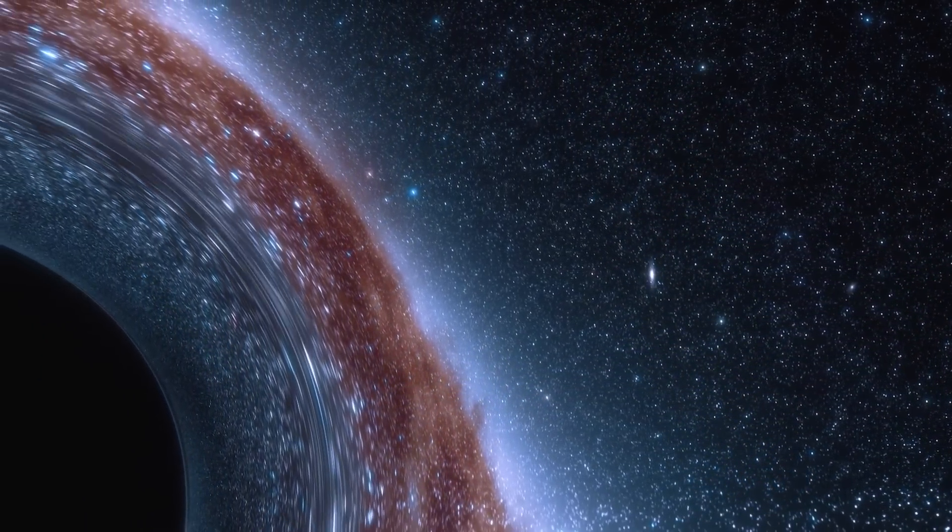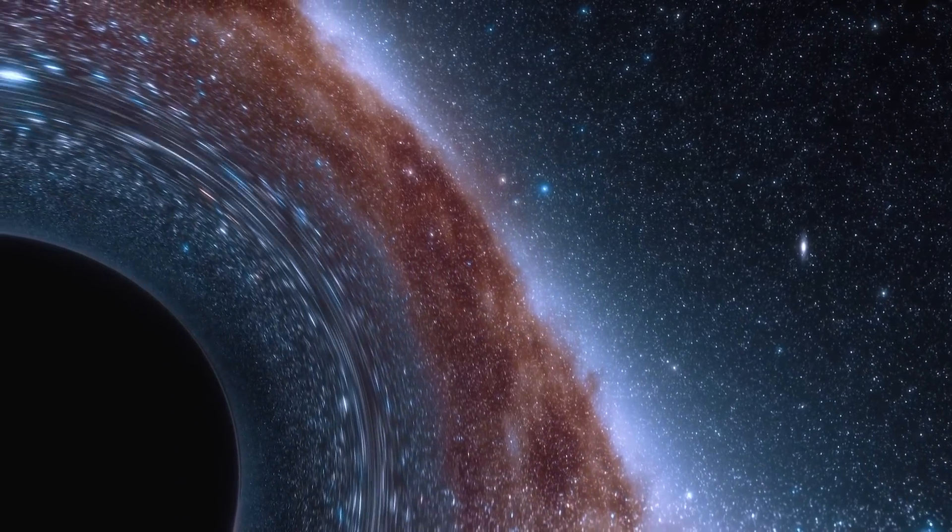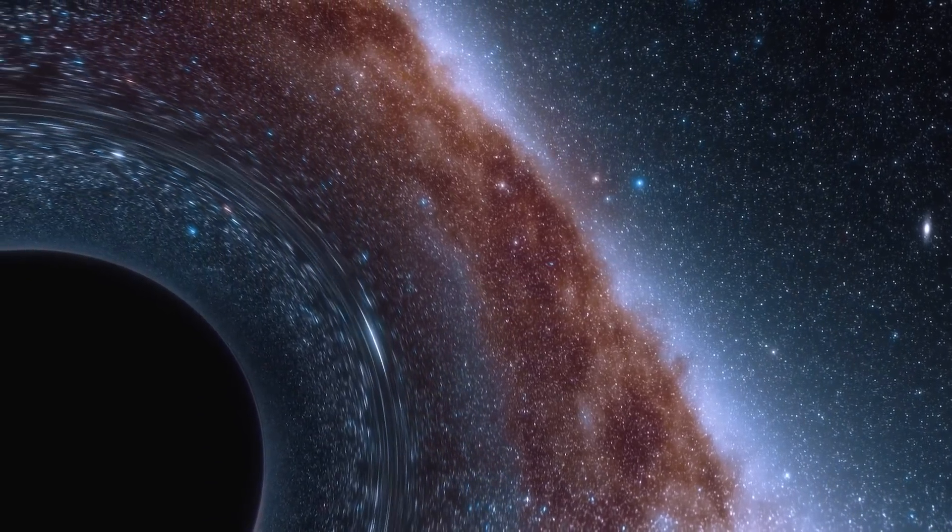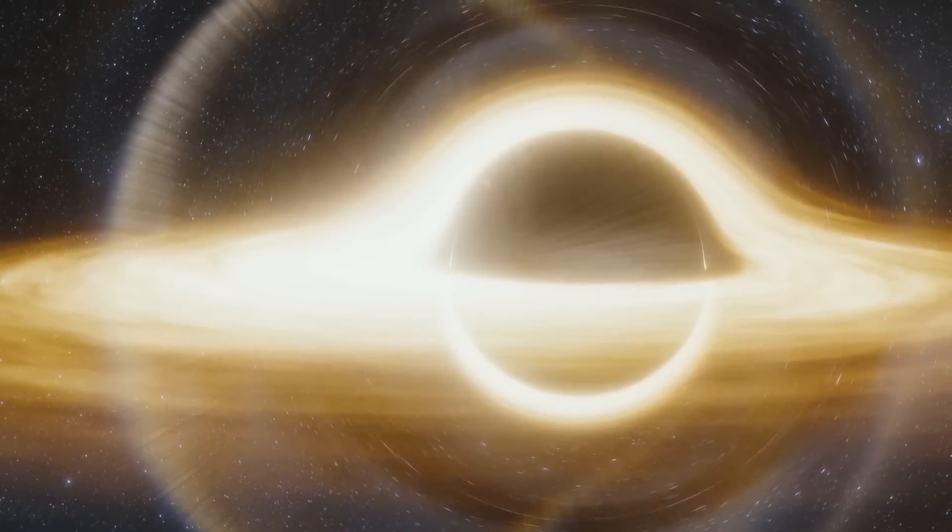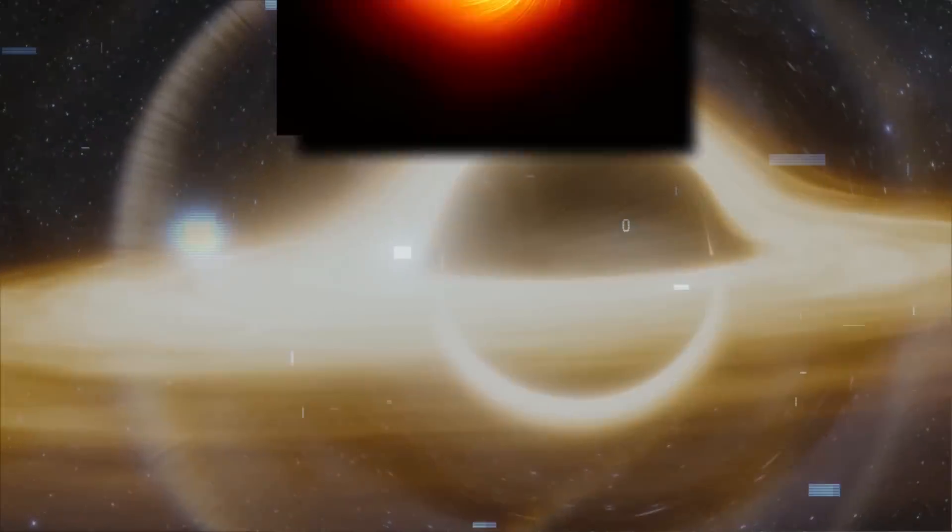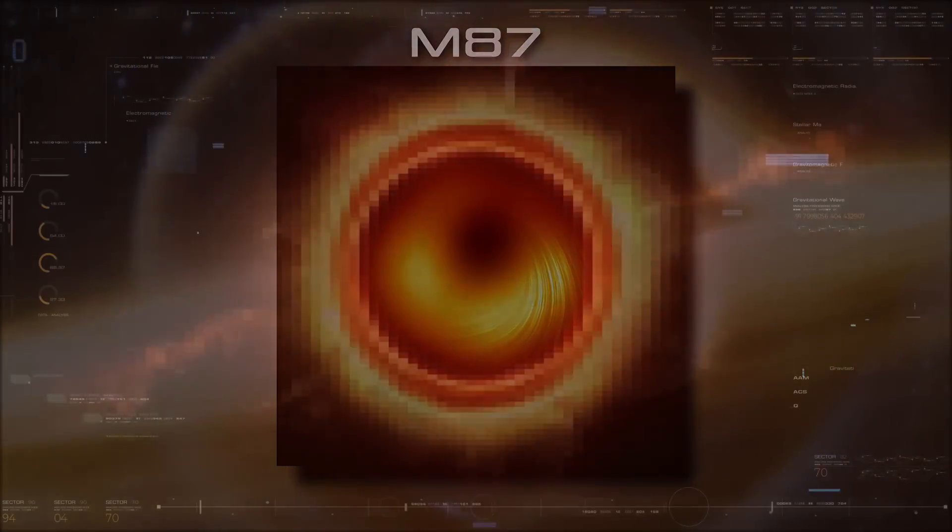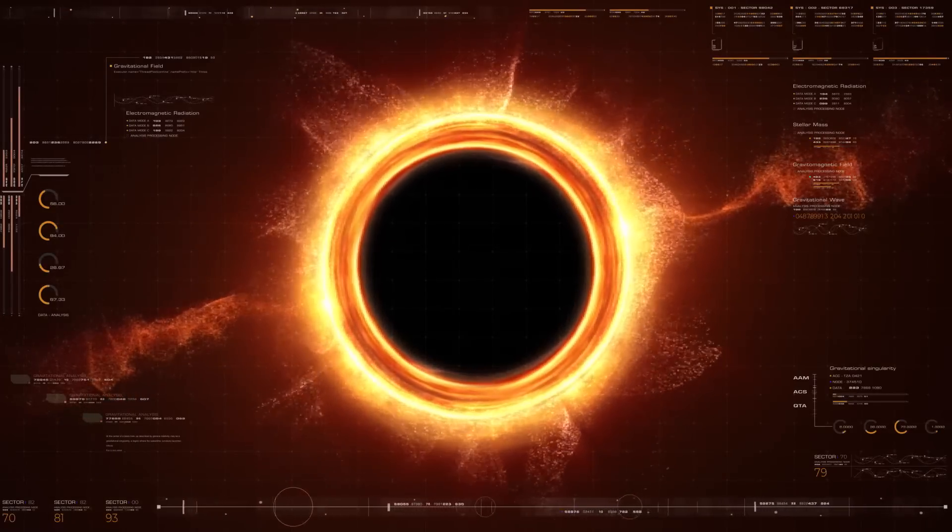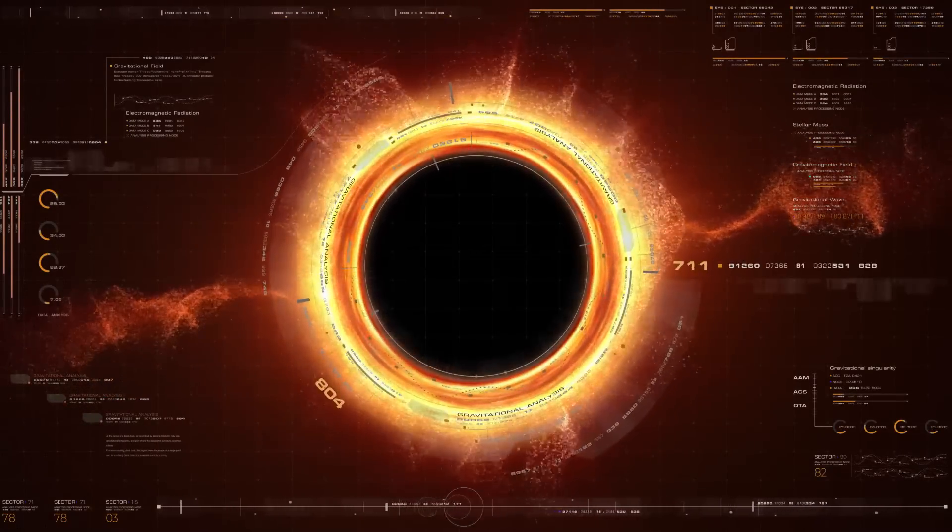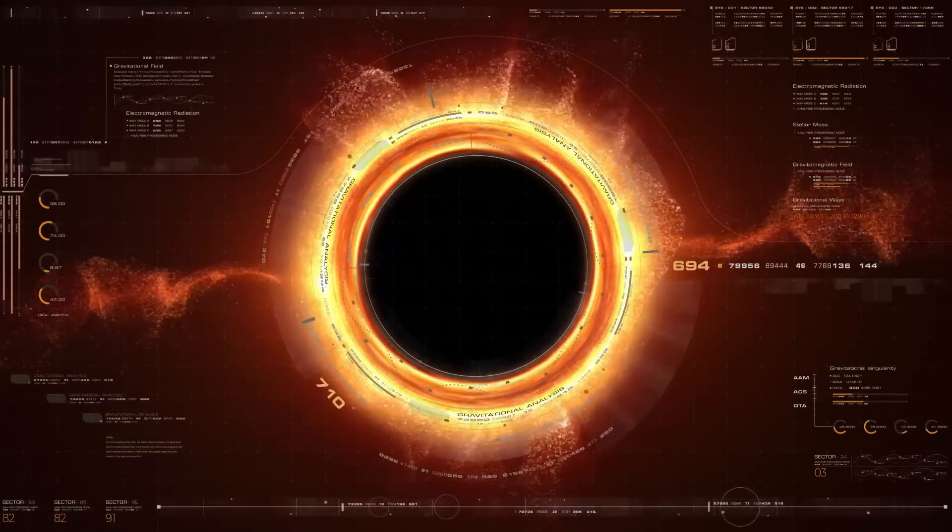Telescopes can also spot black holes by spotting the large accretion disk of stars, gas, and other materials spiraling towards the center, as they did in the case of the M87 supermassive black hole. The material in the accretion disk is heated by friction as it swirls near light speeds and emits electromagnetic radiation.